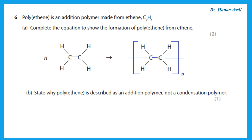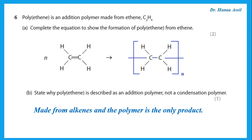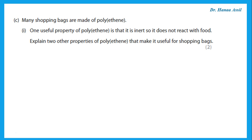State why polyethene is described as addition and not condensation. Because we are starting with alkenes that have double bonds, this is addition polymerization, and the polymer is the only product. When we have alkenes and form a polymer with no other product, this is addition polymerization. Many shopping bags are made of polyethene, and one useful property is that it is inert, so it does not react with food.